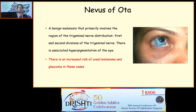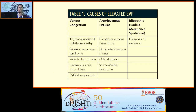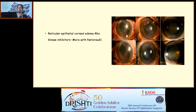On anterior segment, look for conjunctival hyperemia from chronic drug use, and dilated episcleral vessels suggesting elevated episcleral venous pressure. Know the causes of elevated episcleral venous pressure. Look for drug-induced corneal and conjunctival changes — notably reticular epithelial corneal edema caused by Rho kinase inhibitors (especially netarsudil), recurrent herpes simplex keratitis caused by PGA analogues, and conjunctival hyperemia more common with PGA analogues, alpha agonists, and Rho kinase inhibitors.